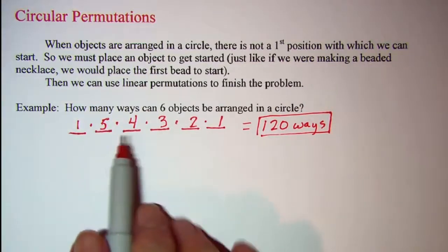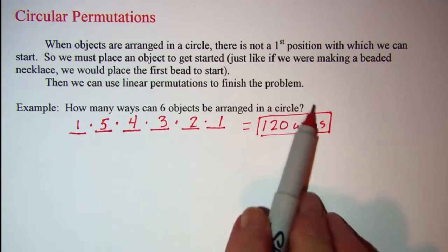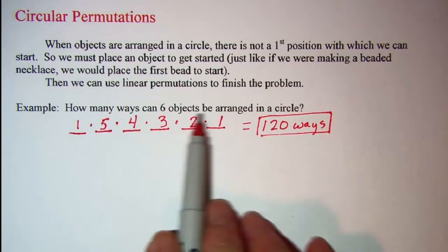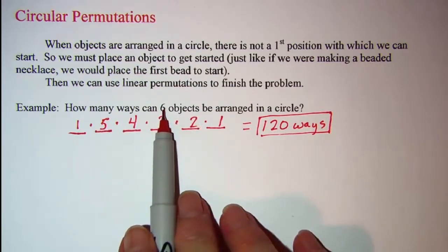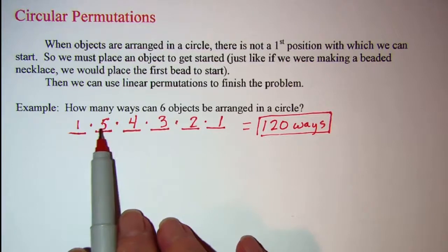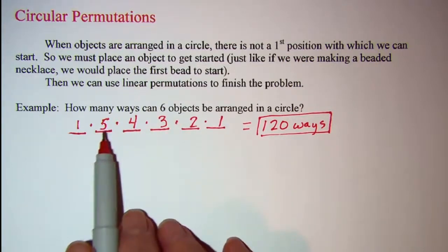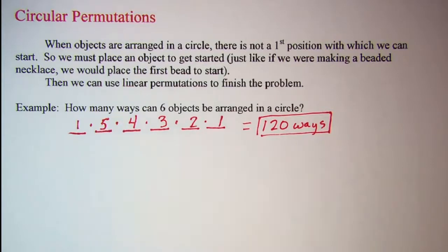So the big thing to remember when we're arranging objects in a circle, we have to take one of the objects away and put it in the first position. And then that allows us to work with a linear permutation. And then we just do a factorial like we normally would. Let's look at another problem.